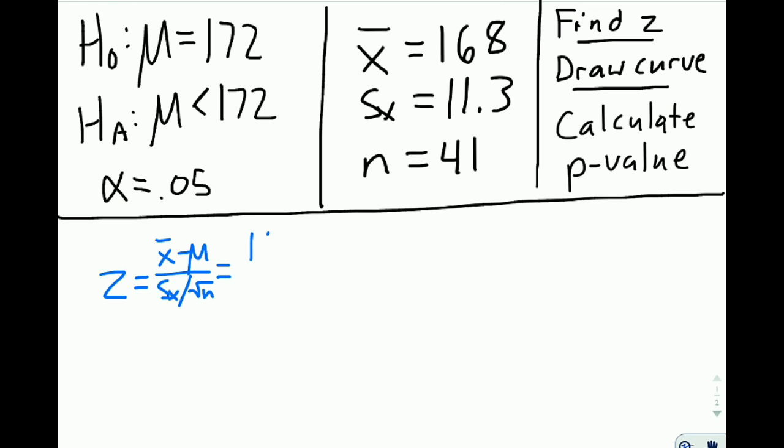So filling all of this in, 168 minus 172, all that over 11.3 divided by square root of 41. When we plug this into our calculator, it's not a bad idea to do this in two steps, depending on your comfort level.